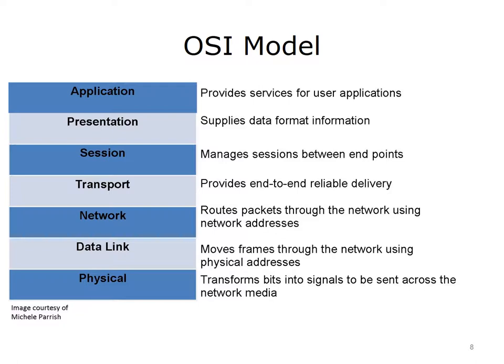The presentation layer prepares data to be passed to the next layer. It is at this layer that data encryption and compression takes place. The session layer manages sessions between endpoints. An example is the network client that exists on a computer system that allows you to log into the network. The session layer establishes, maintains, and ends the connection between the endpoints. The transport layer makes sure that data is received correctly at the destination. If the data isn't received, the transport layer makes sure that the data is re-sent.